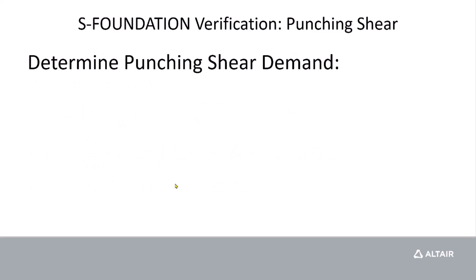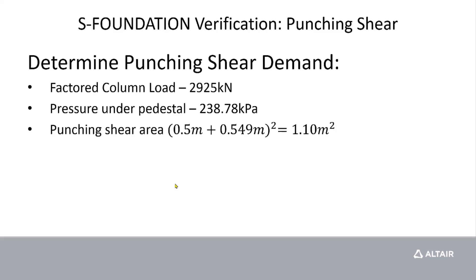Now we also need to determine the punching shear demands. And we already know that our factored column load is 2925 kN. And with that load and the size of our pad, we have a pressure under our pedestal, assuming a rigid pad, of 238.78 kPa. And knowing our punching shear perimeter and the shape that it formed, our punching shear area will equal to 1.1 m squared.